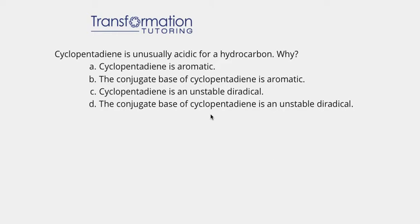Cyclopentadiene is unusually acidic for a hydrocarbon. Why? And these are our answer choices: cyclopentadiene is aromatic, the conjugate base of cyclopentadiene is aromatic, cyclopentadiene is an unstable diradical, or the conjugate base of cyclopentadiene is an unstable diradical. So let's go ahead and see which is the correct answer choice for this question.